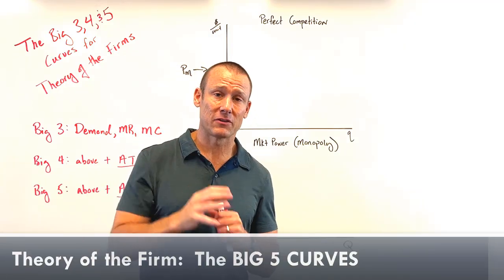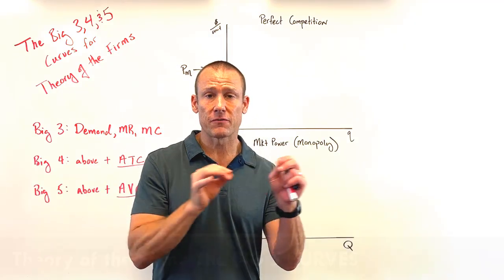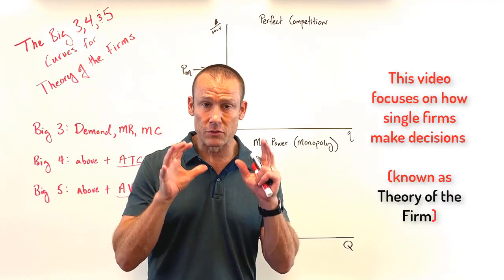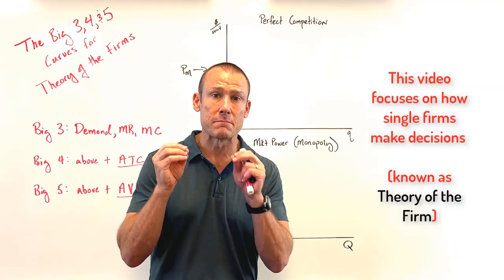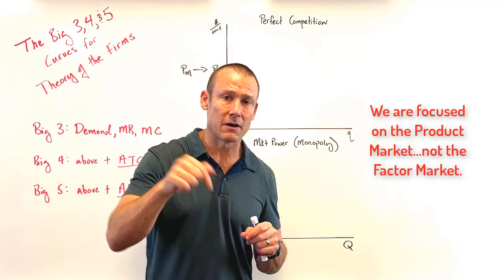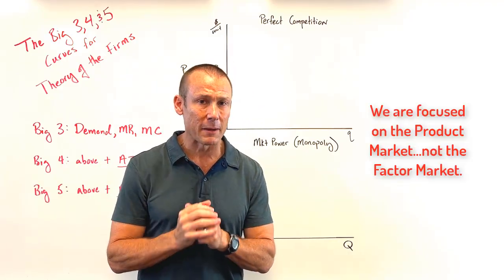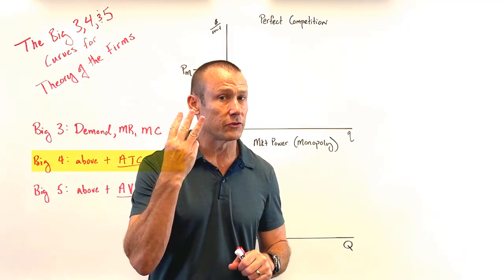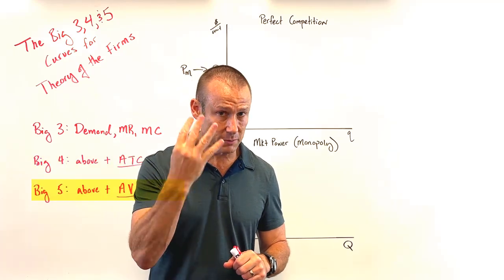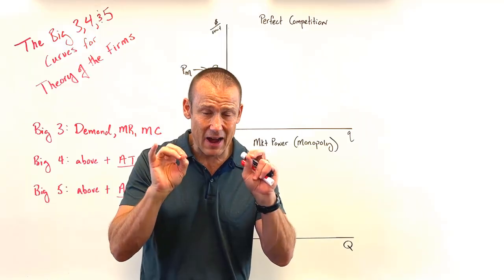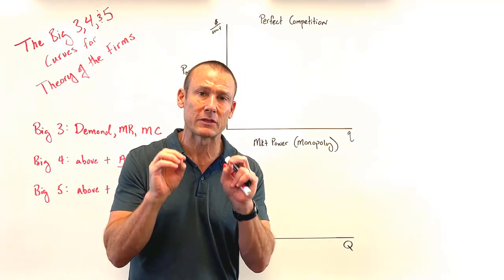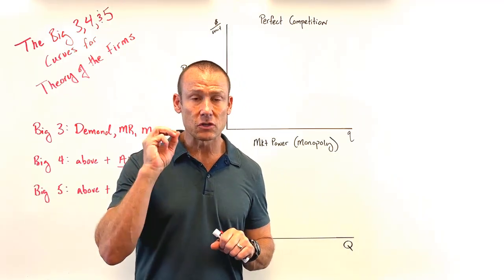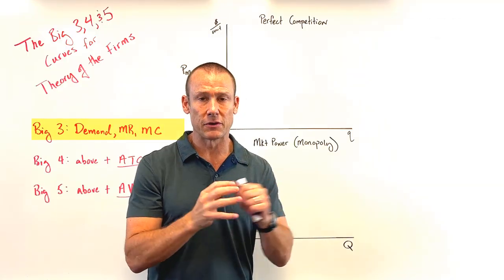I think I have the foundational video for theory of the firm in microeconomics — that part of the curriculum covering perfect competition, monopolistic competition, and monopoly in the product market, the market for goods and services. We're going to talk about the big three curves, the big four curves, and the big five curves. The big four is just the big three plus one, and the big five is just the big four plus one. These five curves are the key to just about every question you'll ever get.